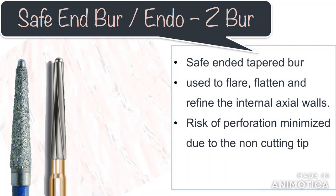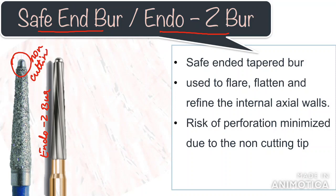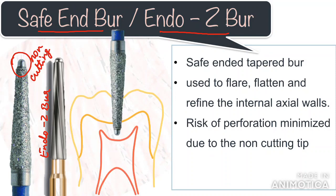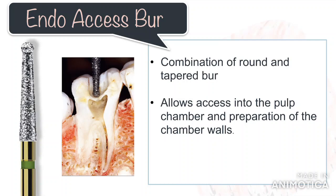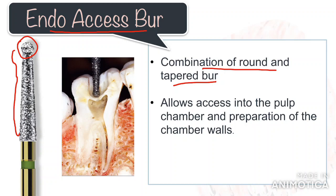After gaining entry into the pulp chamber, you can proceed with a safe-end diamond burr or an Endo-Z burr. The Endo-Z burr is a safe-ended tapered carbide burr. As you can see in the image, these burrs do not have a cutting surface at the tip, so the non-cutting end can be safely placed directly on the pulpal floor without risk of perforation. You can use these burrs to flare, flatten and refine the internal axial walls and create a smooth transition between the access cavity and the walls of the pulp chamber. There are also combination burrs such as the endo-access burr, which combines a round and tapered coarse diamond design allowing access into the pulp chamber and preparation of the chamber walls in one step. However, the most commonly used are the round burr for initial access followed by the Endo-Z burr.